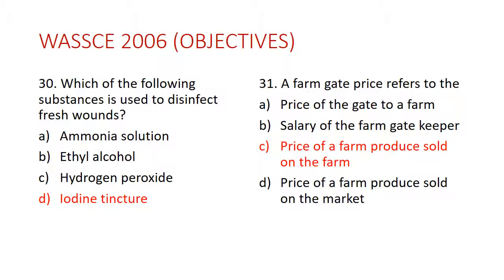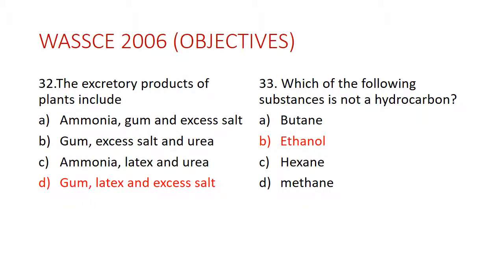Question 31: A farm gate price refers to — the answer is C — the price of a farm produce sold on the farm. Question 32: The excretory products of plants include — the answer is D — gum, latex, and excess salt. Ammonia and urea are not produced by plants; they are produced by animals. That is why the answer is D.